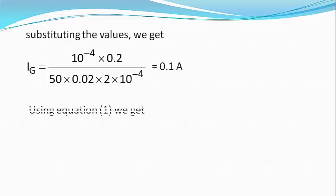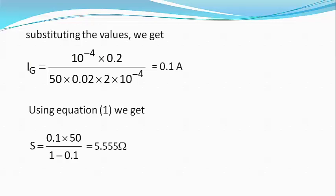Using Equation 1: S = (0.1 × 50) / (1 − 0.1) = 5.5555 ohms. Rounding to two digits after the decimal, S = 5.56 ohms. So the right answer to this question is 5.56, without any units.